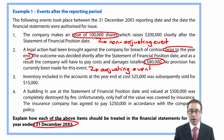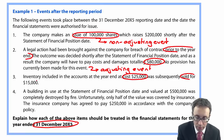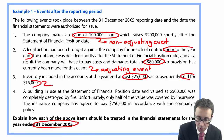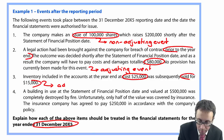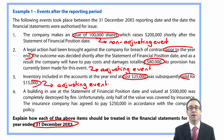Number three: inventory included in the accounts at year end at cost of $25,000 was sold for $15,000. We have now sold the inventory at below cost, so that would once again be an adjusting event. We would need to reduce the inventory from $25,000 down to $15,000 — reducing the value of closing inventory by $10,000.